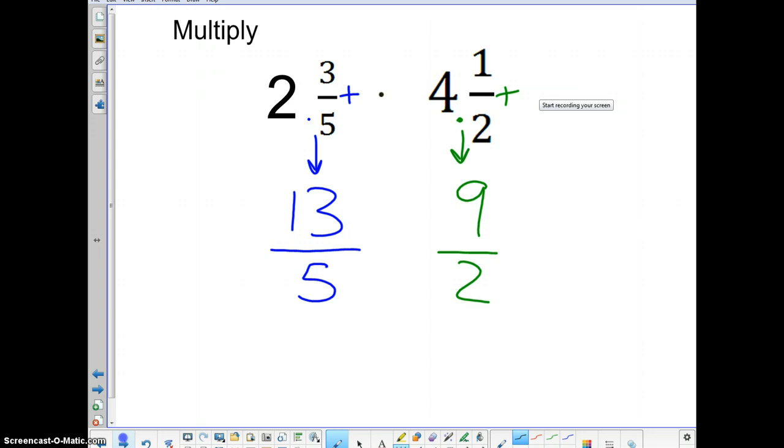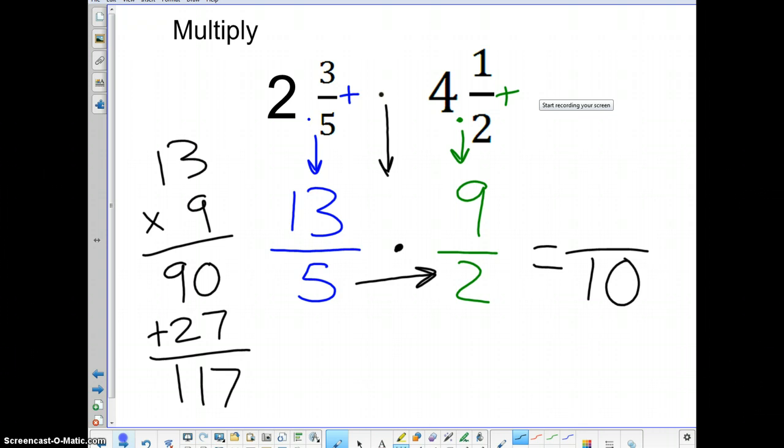Now, we still are multiplying. That comes down as well. There's nothing new there. So, on the bottom, we multiply across. Five times two, that's going to give us ten. And now, thirteen times nine. Thirteen times nine. Well, ten times nine would be ninety. Three times nine is twenty-seven. One-seventeen. One-seventeen is up there.